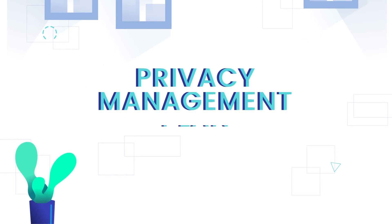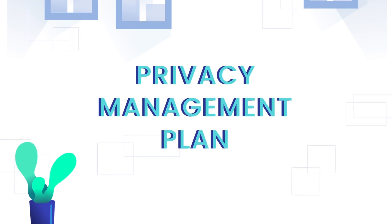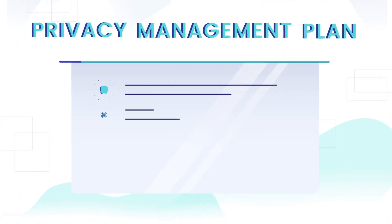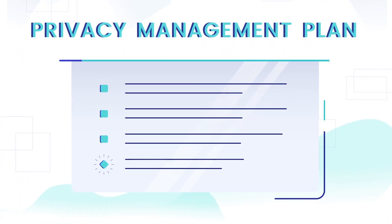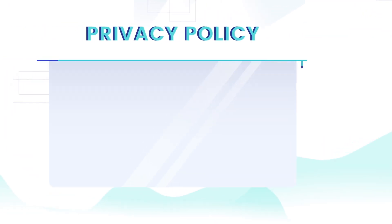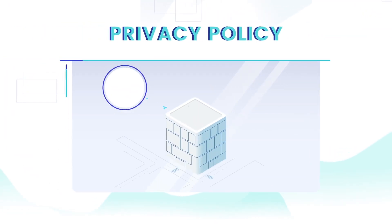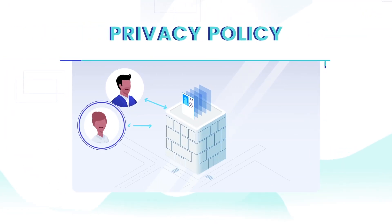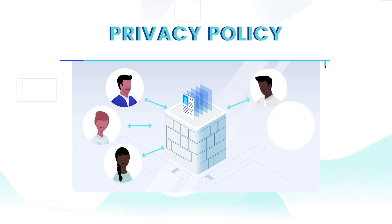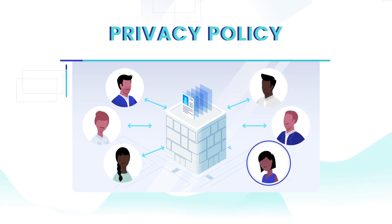For example, your agency will have its own unique privacy management plan to set out what it is doing or will do to meet its privacy obligations, and a privacy policy to provide transparency to the public about how it handles personal information.